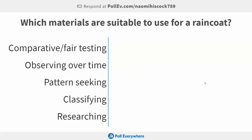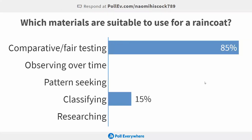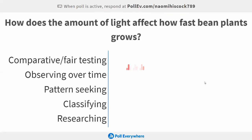Which materials are suitable for a raincoat? Both answers given I would agree with — it depends on how children are actually doing the inquiry. If they are testing for waterproofness and simply saying this is waterproof or it isn't — yes or no — then they would be classifying. If they are testing and putting materials in order from most to least waterproof, then that would be a comparative test, because they're changing the type of material, which is qualitative.